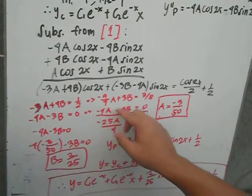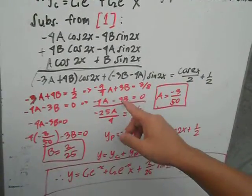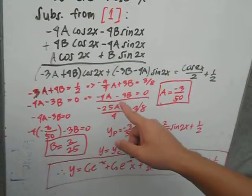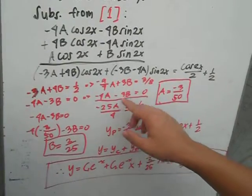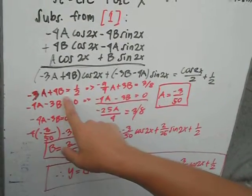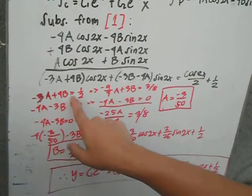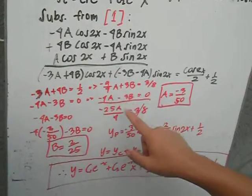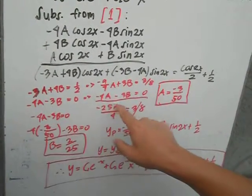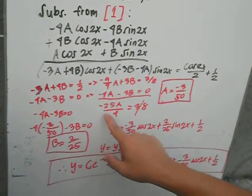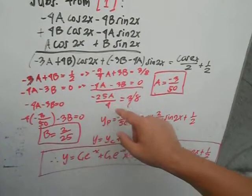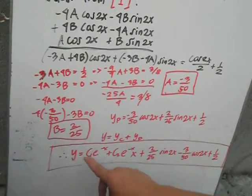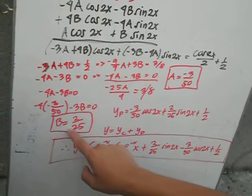Solving for a and b, we multiply one equation by 4 over 3 and substitute. We get negative 25 over 4 times a equals 3 over 8, so a is equal to negative 3 over 50. Then b is equal to 2 over 25.